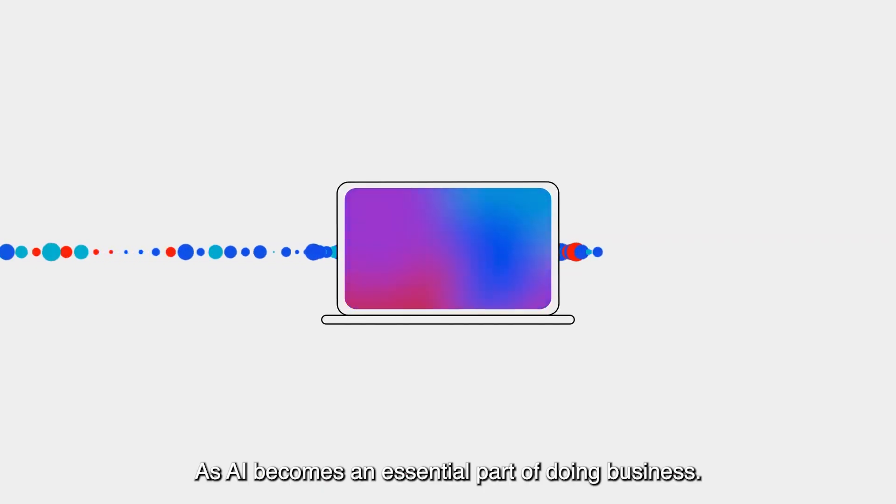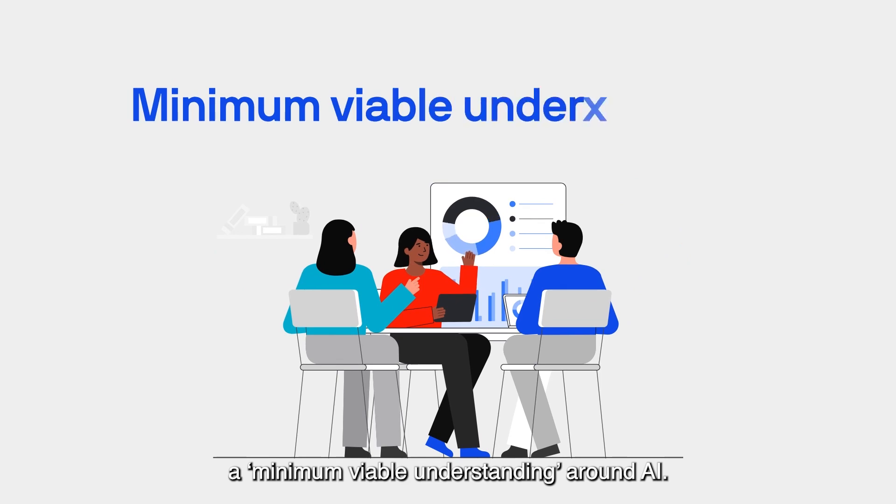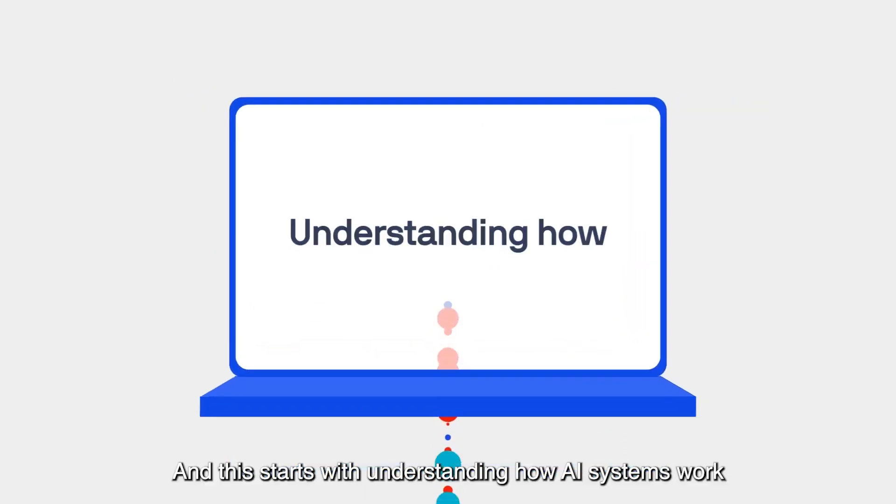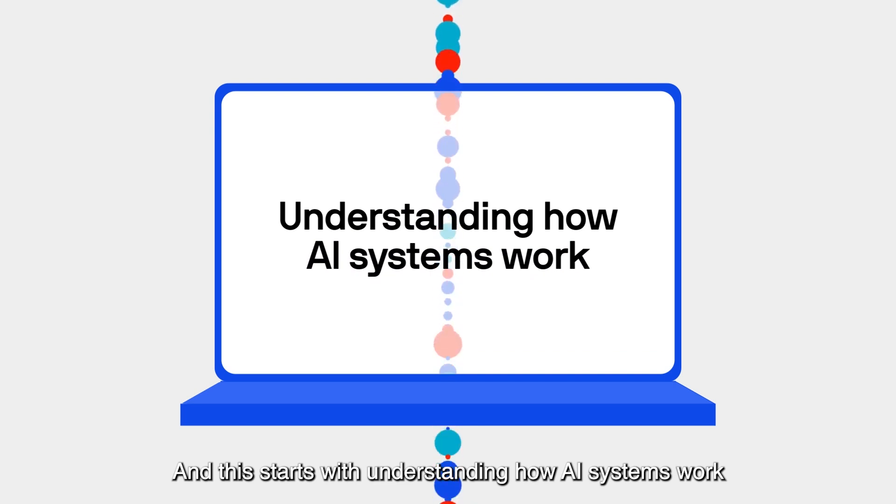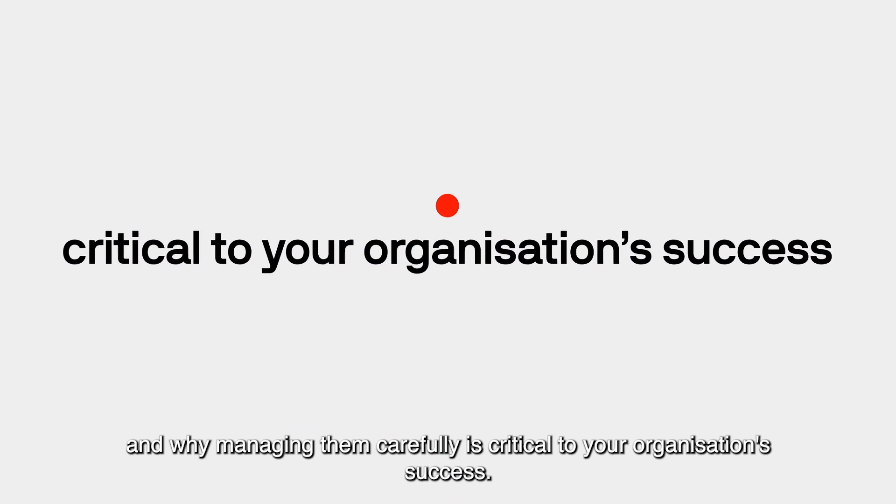As AI becomes an essential part of doing business, every business leader needs to cultivate what we call a minimum viable understanding around AI. And this starts with understanding how AI systems work and why managing them carefully is critical to your organisation's success.